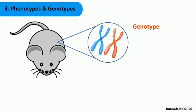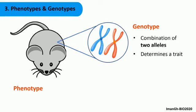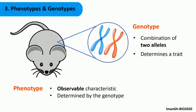The combination of the two alleles inherited from the parents is called the genotype. The genotype determines the phenotype of each trait. The phenotype is the observable trait such as grey fur, short tail and small eyes.